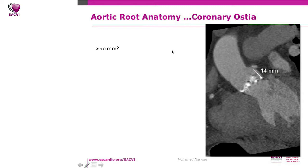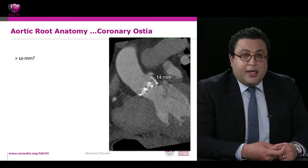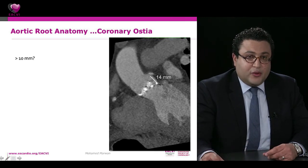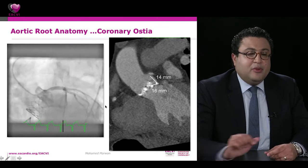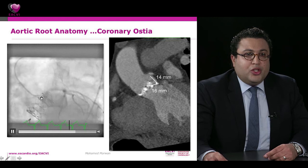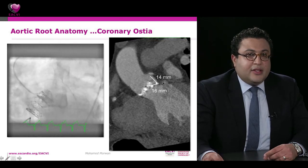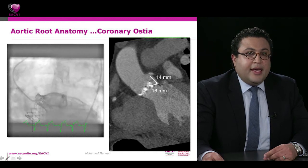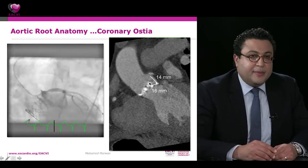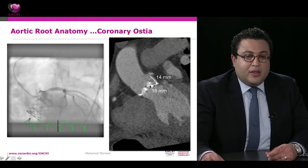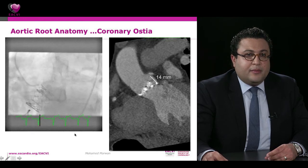A common threshold discussed is 10 mm distance from annulus to left main as a safe margin. However, one case demonstrated that a 14 mm distance was insufficient because the leaflet itself was 16 mm long with heavy calcification on the tip. Selective angiography confirmed left main compromise by the calcium. Data from John Webb's group (2013) with 345 controls and 28 coronary obstruction cases showed most obstructions occurred below 10 mm, but some occurred at distances up to 16 mm. Other considerations include cusp length, tip calcification, and sinus depth.